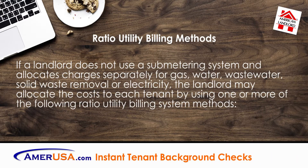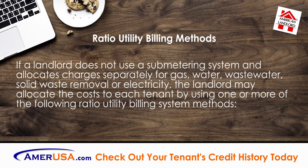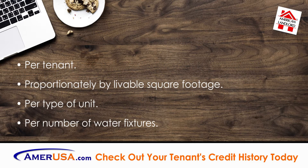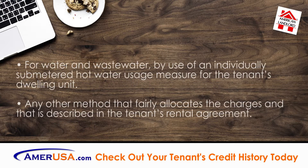Ratio Utility Billing Methods: If a landlord does not use a sub-metering system and allocates charges separately for gas, water, wastewater, solid waste removal, or electricity, the landlord may allocate the costs to each tenant by using one or more of the following Ratio Utility Billing System methods: per tenant, proportionately by livable square footage, per type of unit, per number of water fixtures, for water and wastewater by use of an individually sub-metered hot water usage measure for the tenant's dwelling unit.